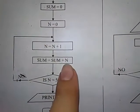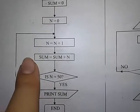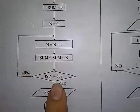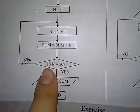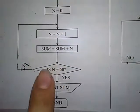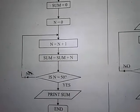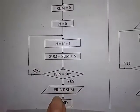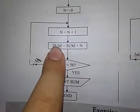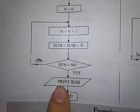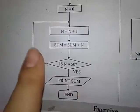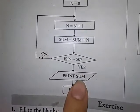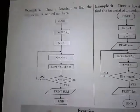اسی طرح یہ loop چلتا رہے گا — n = 4، 5، 6 اور sum بڑھتا رہے گا — جب تک n کی value 50 کے equal نہیں آ جاتی۔ جب n = 50 ہو جائے گا تو condition true ہو گی اور 'yes' کی طرف جا کر sum print کروا دیا جائے گا، جو پہلے 50 natural numbers کا مجموعہ ہوگا۔ پھر flowchart end ہو جائے گا۔